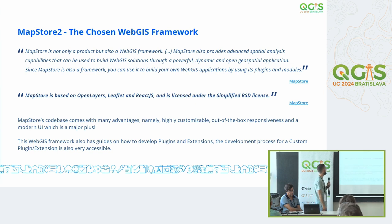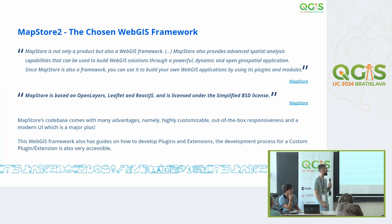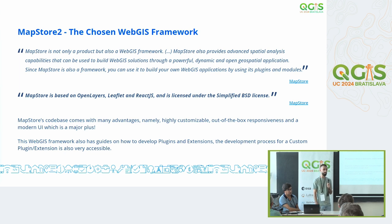Why have we chosen MapStore? Essentially because MapStore uses an ecosystem which we already had know-how in — we already had know-how in React, in OpenLayers, and Leaflet. The licensing is super important obviously, because we needed something we could actually use without paying licensing fees. A big part of it is also that MapStore's documentation is super user-friendly, and even for developers it was super easy, so that also saved us time. And responsiveness out of the box was a major plus for us.